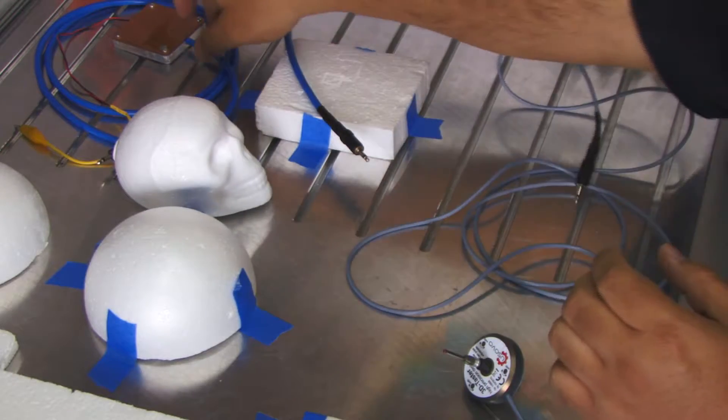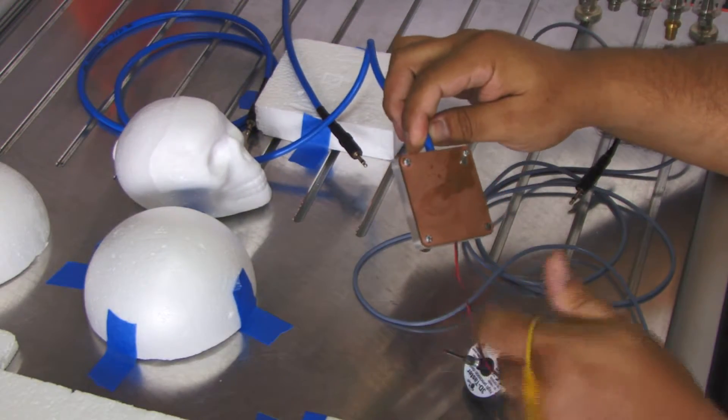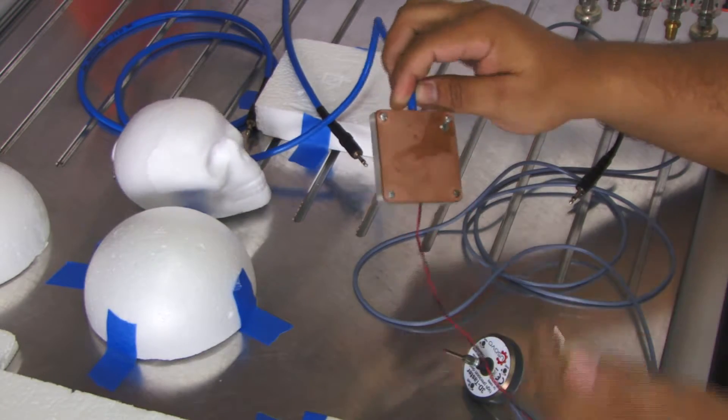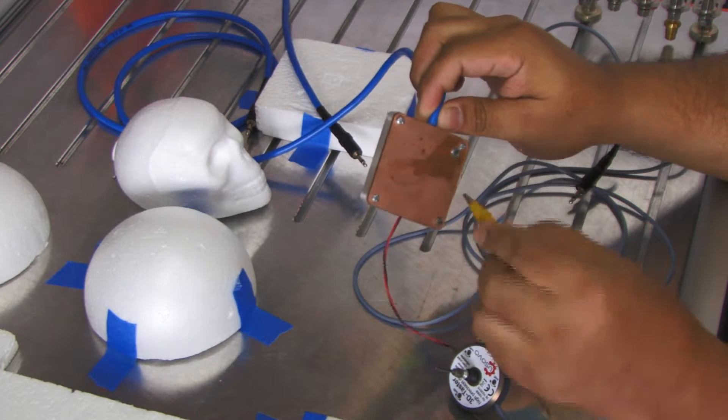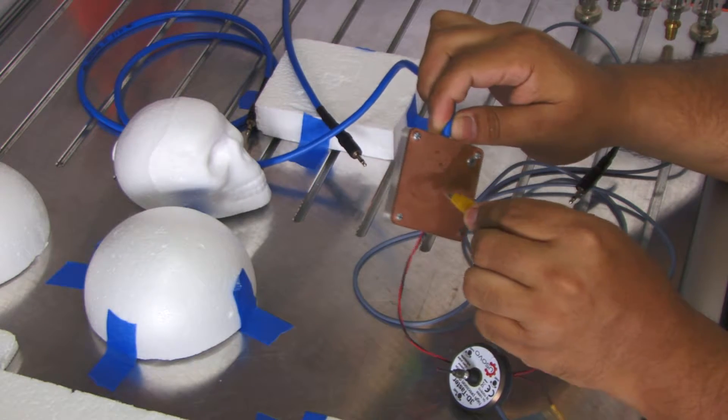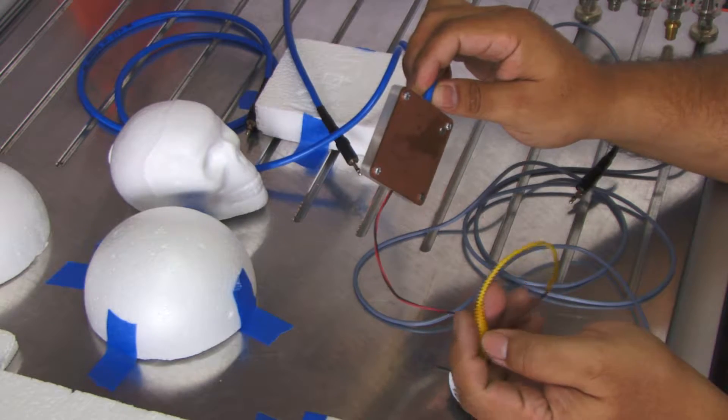As you may know, I made my own tool length sensor with this system. It's like a normal switch. It's a copper plate and when this thing touches here with the end mill, it activates the tool length sensor.